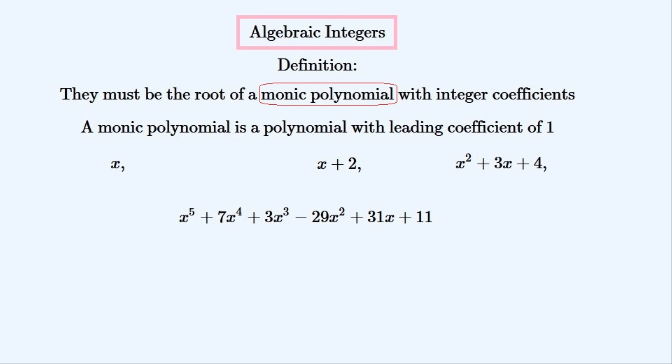Here are some examples of monic polynomials with integer coefficients. A monic polynomial is a polynomial whose leading term has a coefficient of 1. We wouldn't write out the 1 in front of the leading term; we'd just write out the leading term, and all of the rest of the coefficients have to be integers, which could include 0 and minus 1.